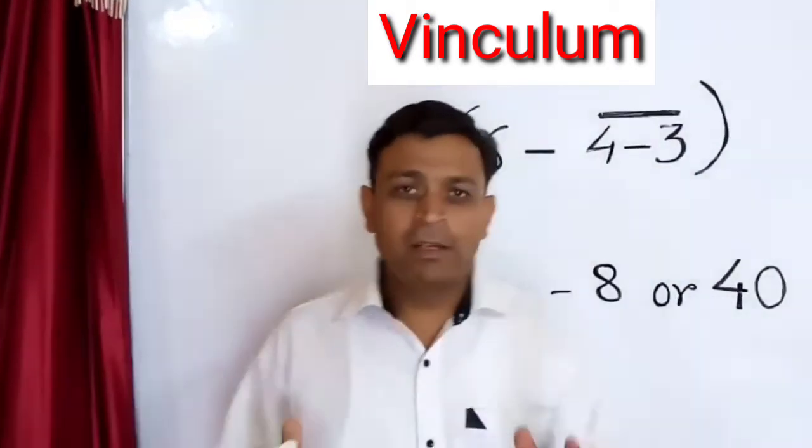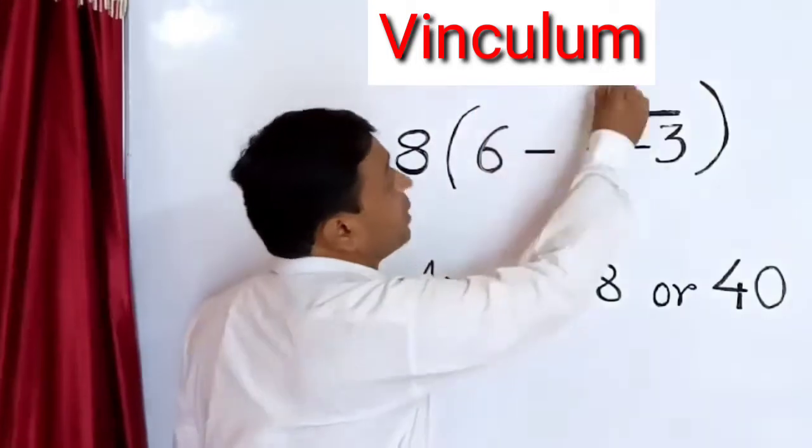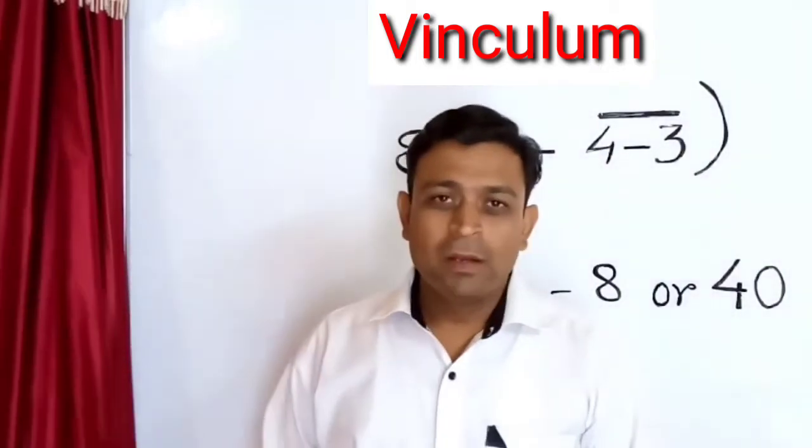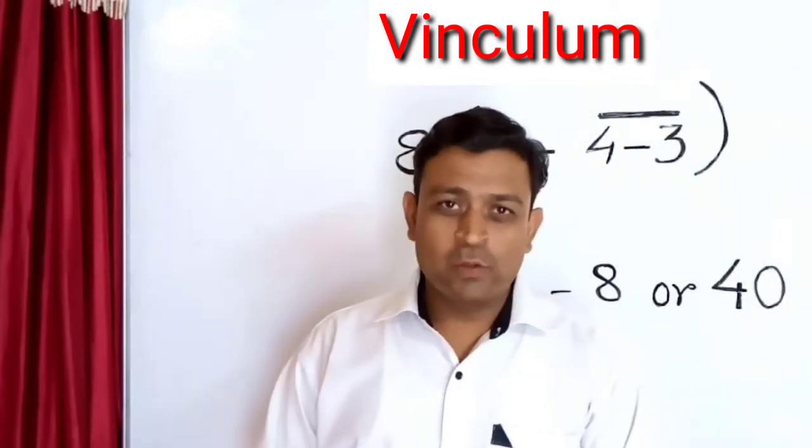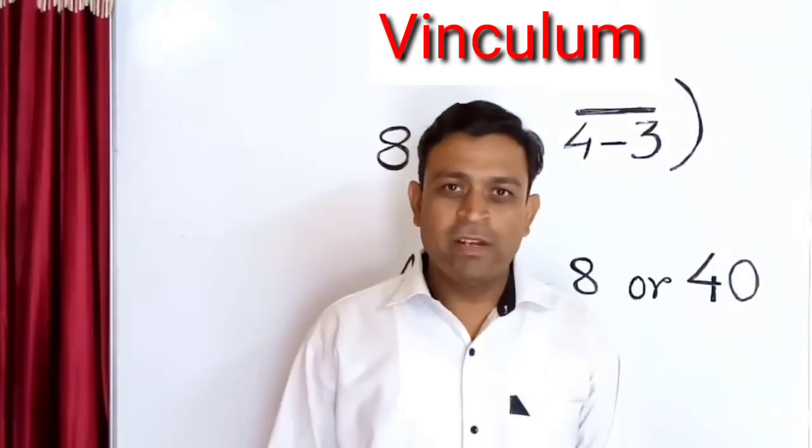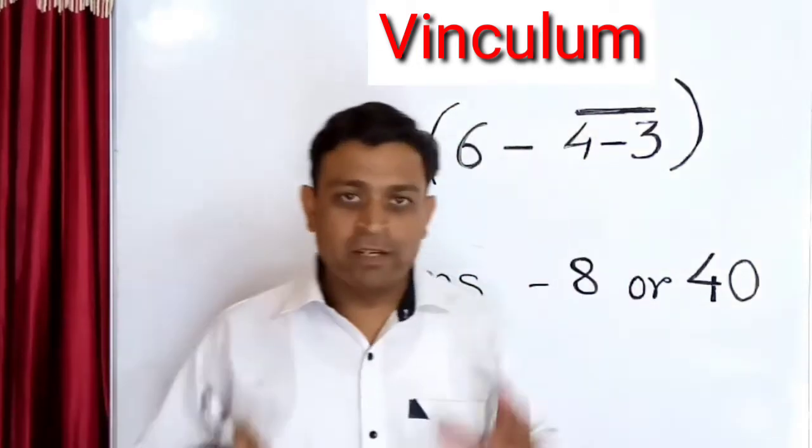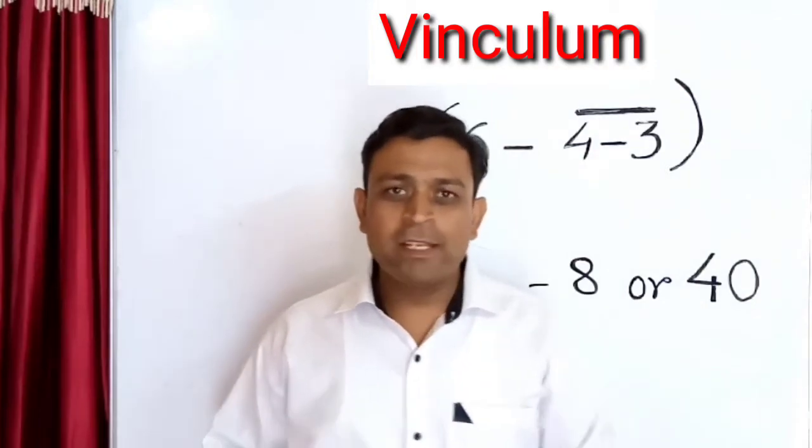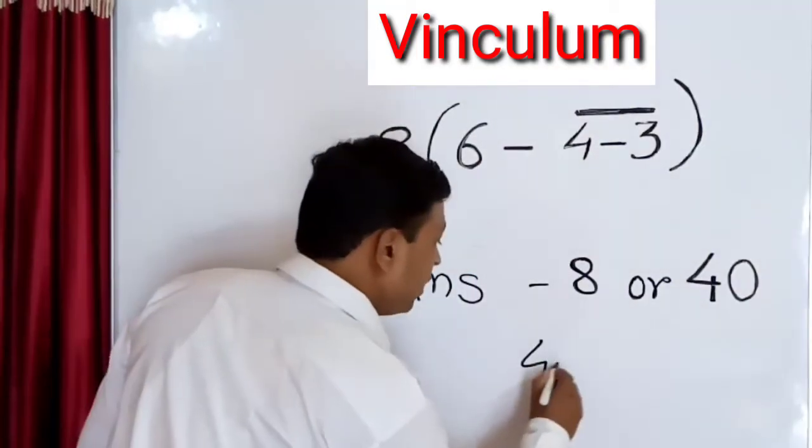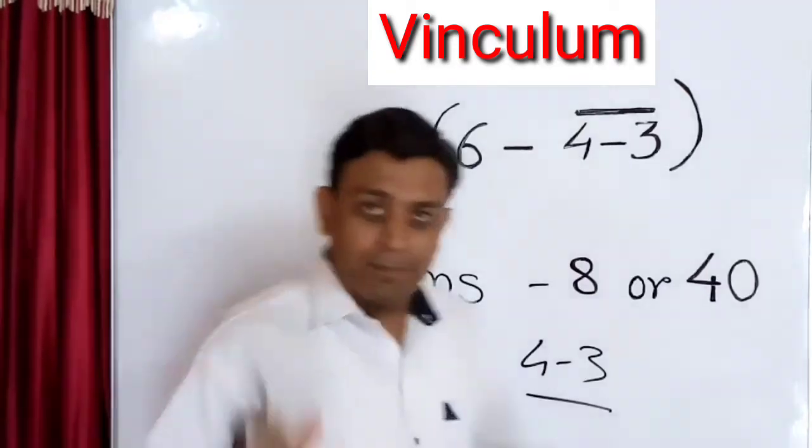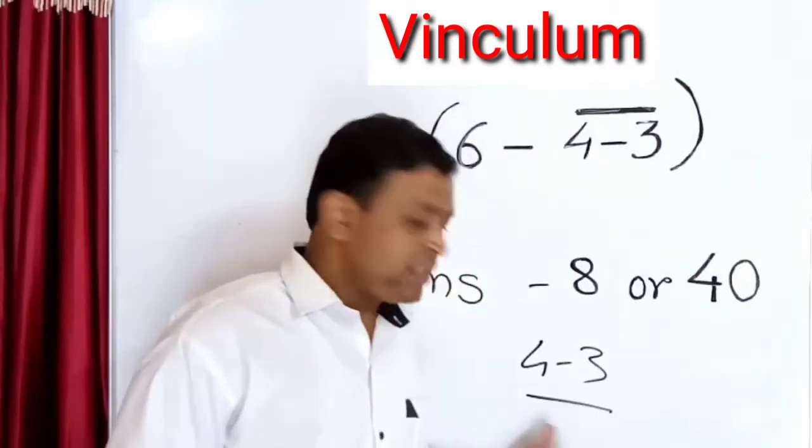This horizontal line as you can watch on the top of 4 minus 3 is nothing but vinculum, or also it is called as bar. Friends, this underline is placed generally over the expression. In some cases, very rare cases, this underline is placed below the expressions. But that is very rare.